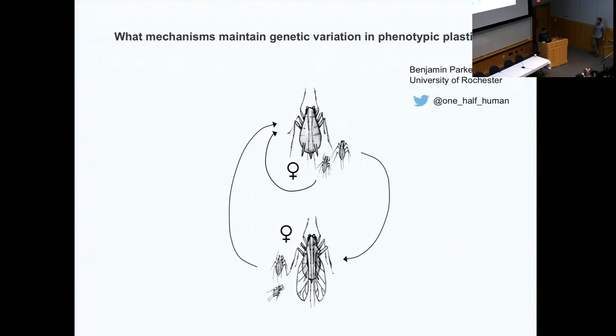It is my pleasure to introduce Ben Parker, who is currently a postdoctoral scholar at University of Rochester. His research focuses on the genetic mechanisms that underlie phenotypic variation, and he seeks to understand how that variation is maintained in natural populations. He's particularly interested in the traits underlying associations between animals and microbes using the pea aphid and other insect systems. Today, Ben will be telling us about a very new project he has recently started that investigates the genetic variation in the pea aphid wing polyphenism.